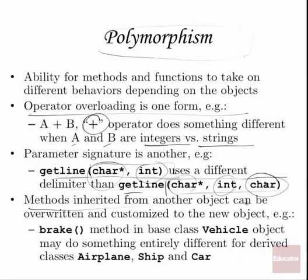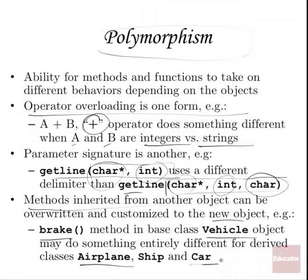Methods inherited from another object can be overwritten and customized to the new object. Your brake method could be in a base class vehicle, but what brake does in terms of polymorphism — if airplane is a vehicle, you've got air brakes, where the flaps on the outside of the wings come down to slow the airplane down. A car has drum brakes or disc brakes on the wheels. And a ship may not have brakes at all, so you call the brake method and just send an error — we have to actually run the engine in reverse in order to slow it down, which is a totally different concept than actual braking.